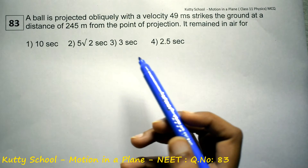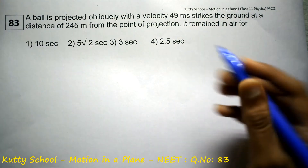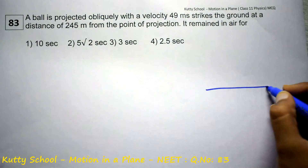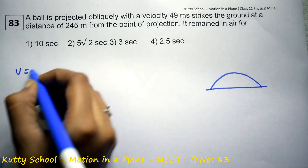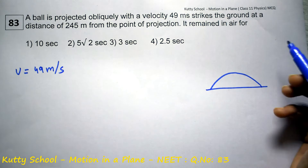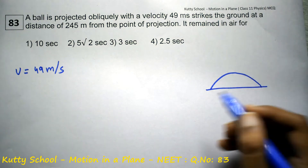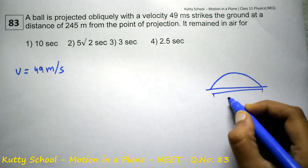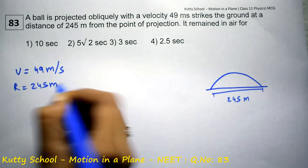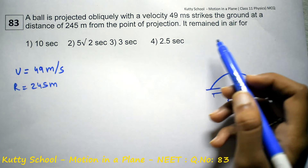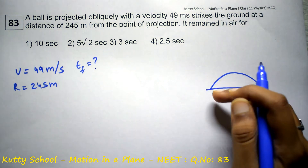A ball is projected obliquely with a velocity of 49 meters per second. It strikes the ground at a distance of 245 meters from the point of projection — that is, the range is equal to 245 meters. We need to find how long it remained in the air, so we need to find the time of flight.